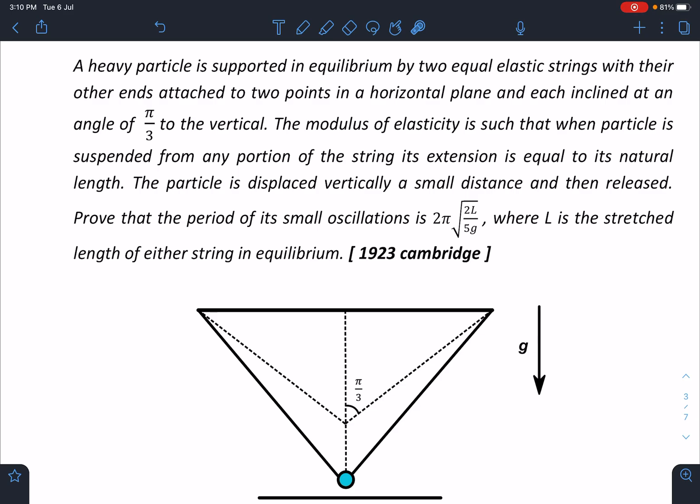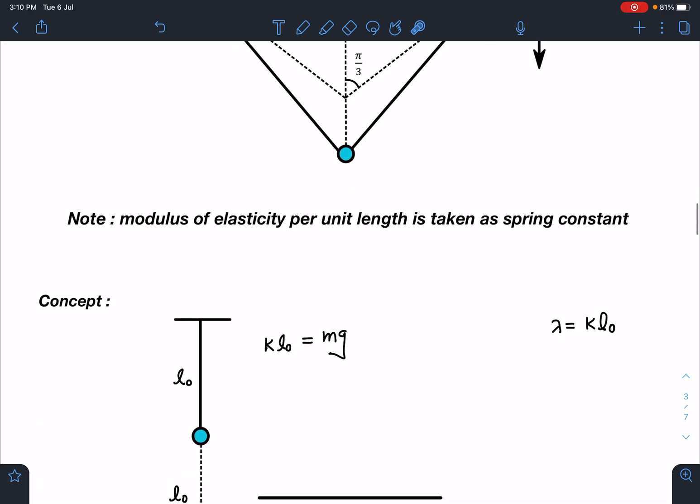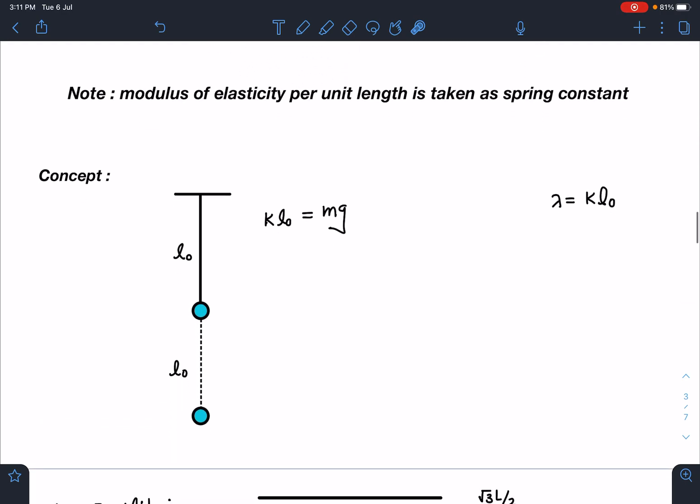The language is slightly different because it's a very old problem, so the language of that time and now is quite different. First thing you should notice is when the author is referring to modulus of elasticity, actually what he is meaning is modulus of elasticity per unit length is defined as spring constant. As per the author, they are related to each other, cross-section area also comes. In present time we take modulus of elasticity as Young's modulus.